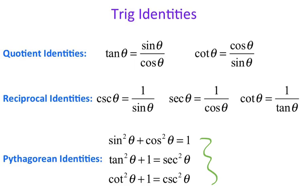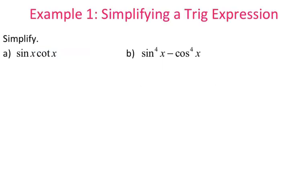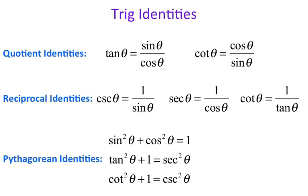What we're doing with these identities is we're using them to simplify expressions. So let's go to an example — simplifying a trig expression. You're trying to take your identities and substitute them into the expression to simplify it. If you look at sine of x and go back to our list of identities, there's no identity that says sine of x equals something, so we can't replace sine of x with anything.